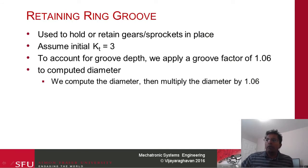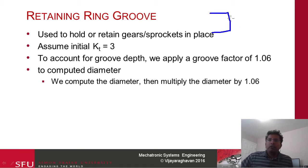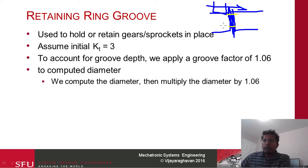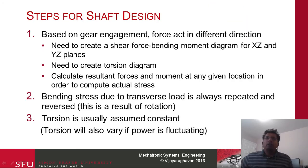To prevent a gear from moving axially, a retaining ring is used. The shaft is grooved at that location, the gear sits on the shaft, and a ring snaps into the groove. The KT value for a retaining ring groove is 3, applied to the inner (groove) diameter. A factor of 1.06 is then applied to convert from the inner diameter to the final outer diameter. The shaft direction is assumed to be the z-direction for the design procedure.